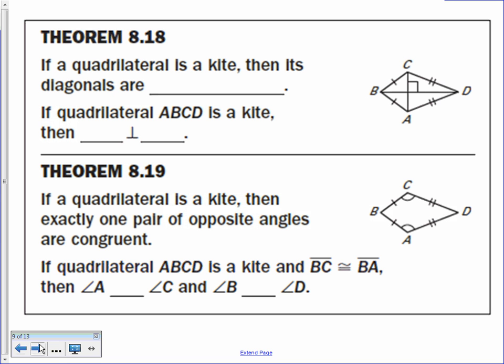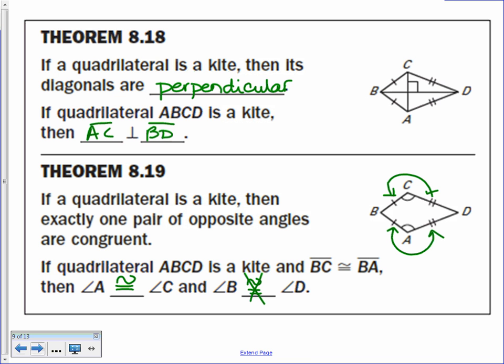Our final theorems today: if a quadrilateral is a kite, then its diagonals are perpendicular — the same as in a rhombus — so AC is perpendicular to BD. Also, if a quadrilateral is a kite, then exactly one pair of opposite angles are congruent. In this case, angle A is congruent to angle C, but angle B is not congruent to angle D. Angles C and A are between the non-congruent sides, making them the only congruent pair.